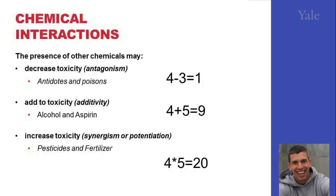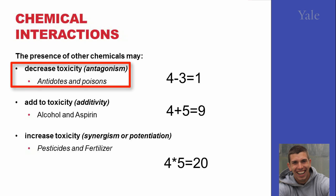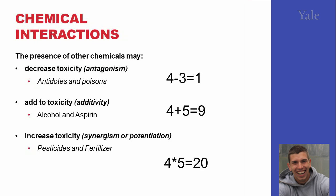There are three types of basic chemical interaction. There is antagonism, when one chemical reduces the effect of another. That is the function of antidotes. Antidotes are antagonistic to the effect of poisons. Therefore, they reduce the effect of the poison and keep you alive.